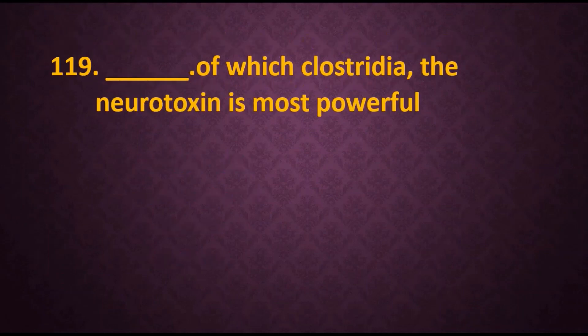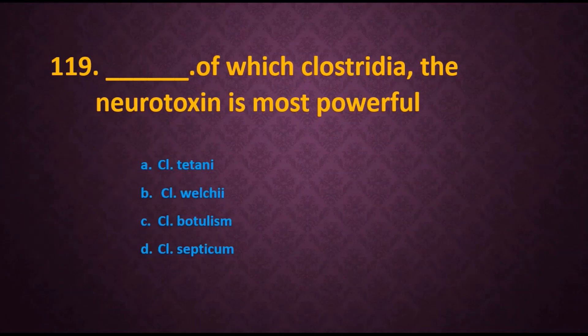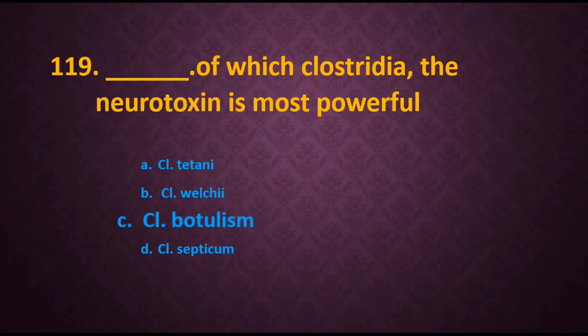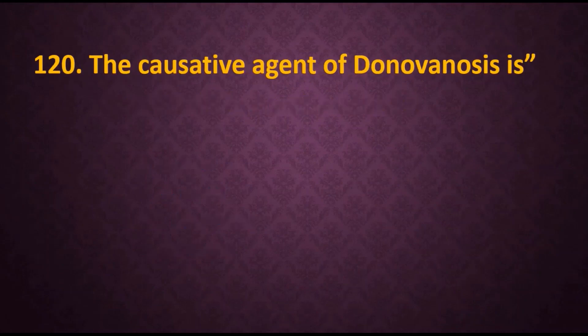Question 119: The neurotoxin of which Clostridium is most powerful? Options are: A) Clostridium tetani, B) Clostridium welchii, C) Clostridium botulinum, D) Clostridium septicum. The answer is Clostridium botulinum, which causes a disease called botulism and produces a very powerful neurotoxin.